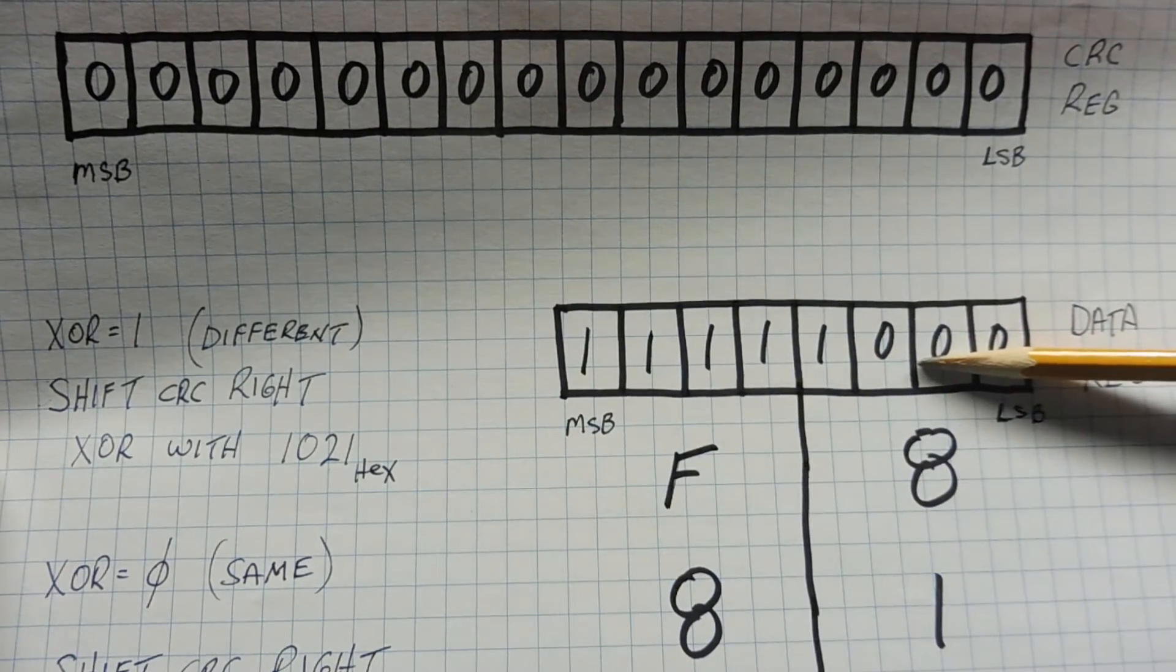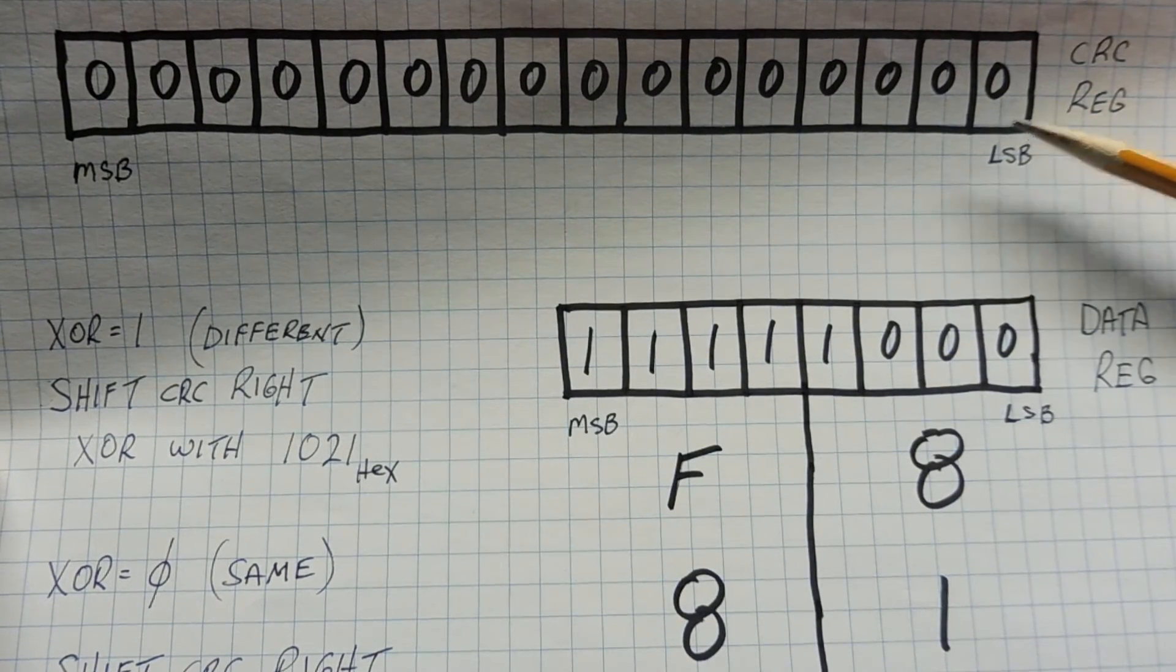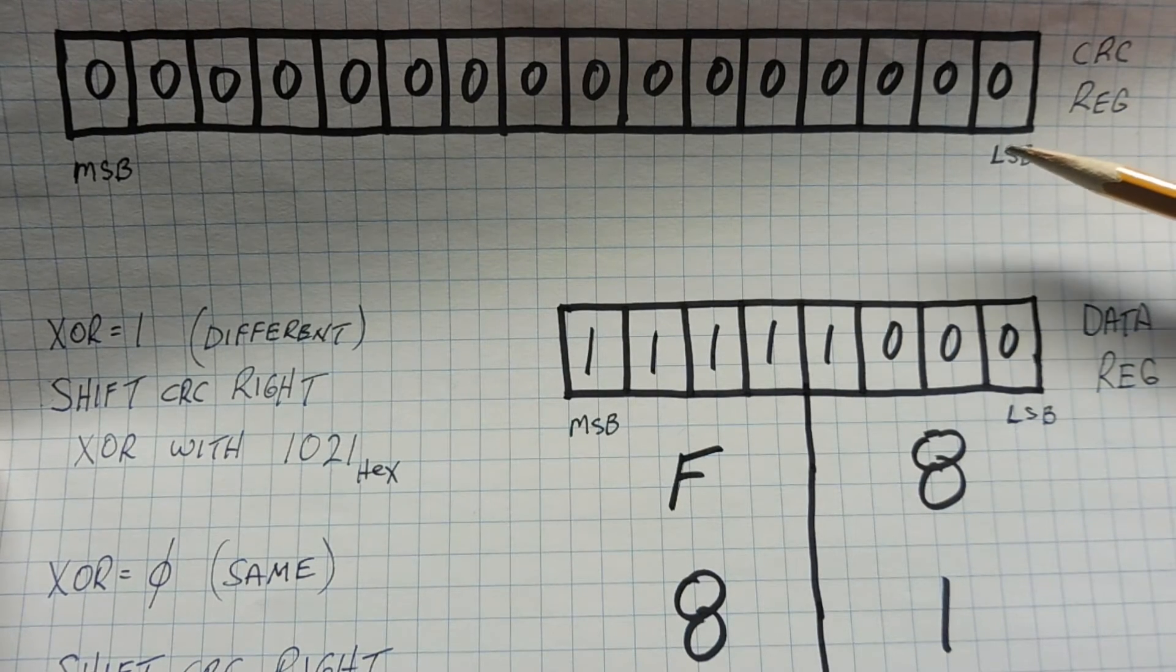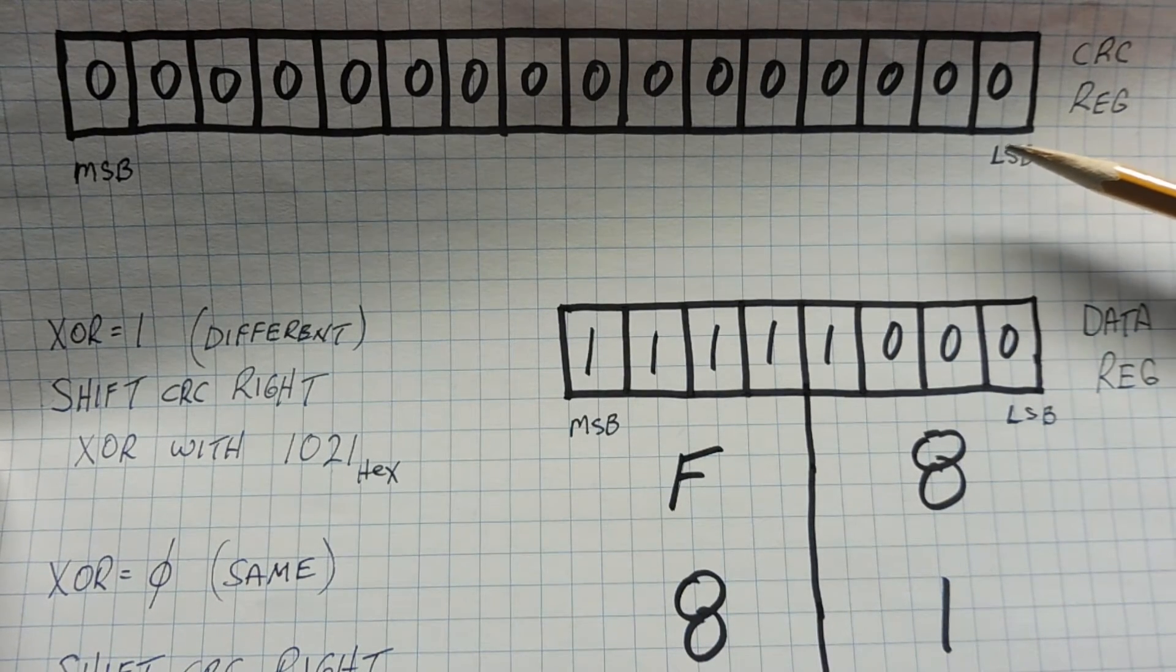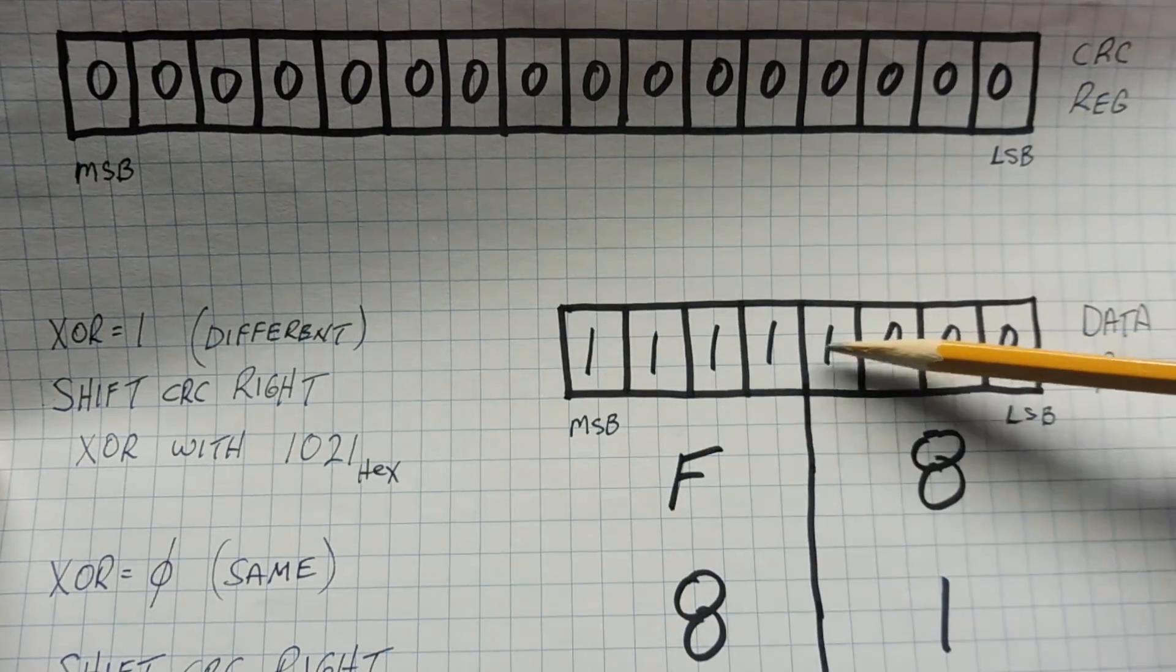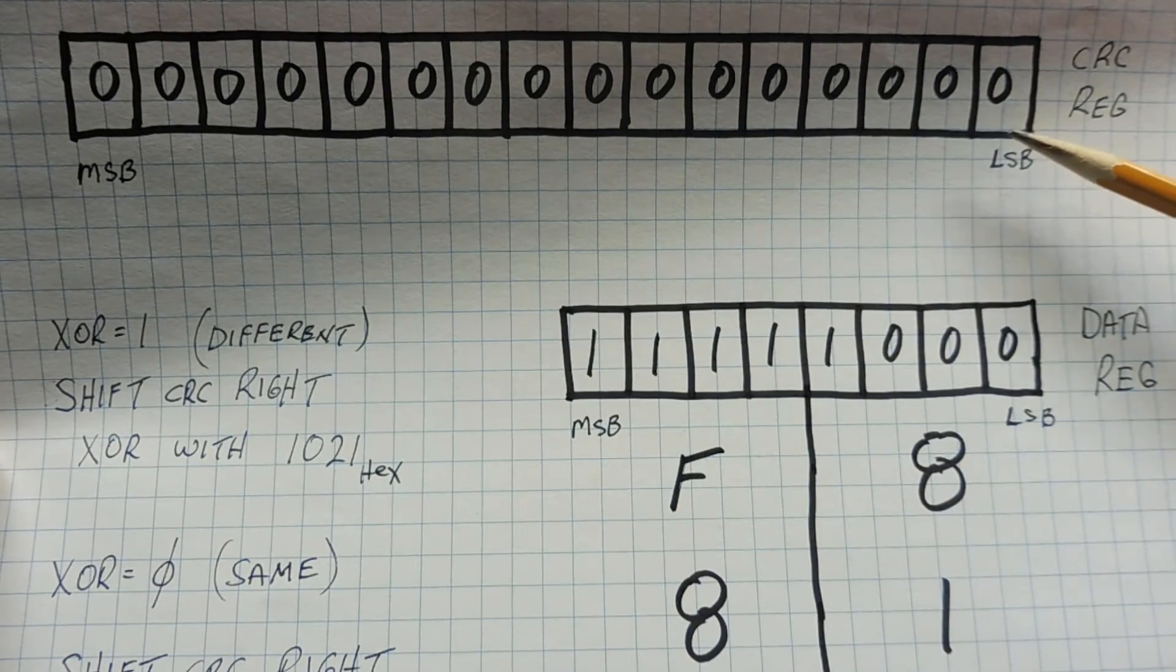Now if they're different, then we do a shift right on the CRC, and we exclusive OR it with the hex value 1021, and then put that value back into the CRC register. And we keep on moving along the data register, always comparing it to the least significant bit of the CRC register.